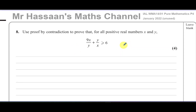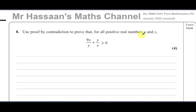The question says: use proof by contradiction to prove that for all positive real numbers x and y, the inequality 9x/y + y/x is greater than or equal to 6.